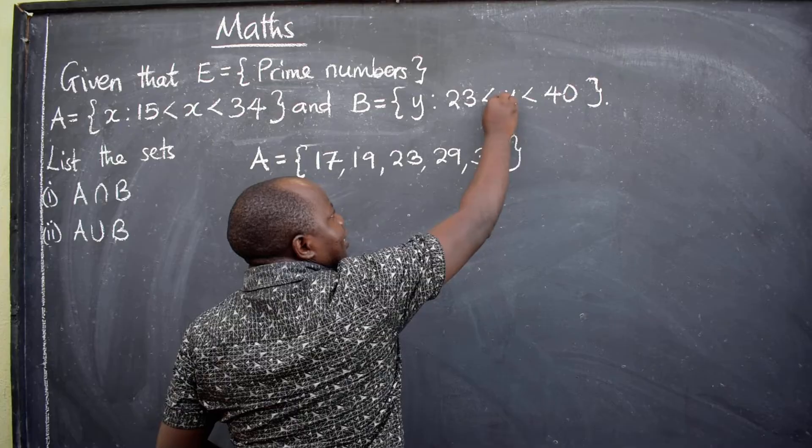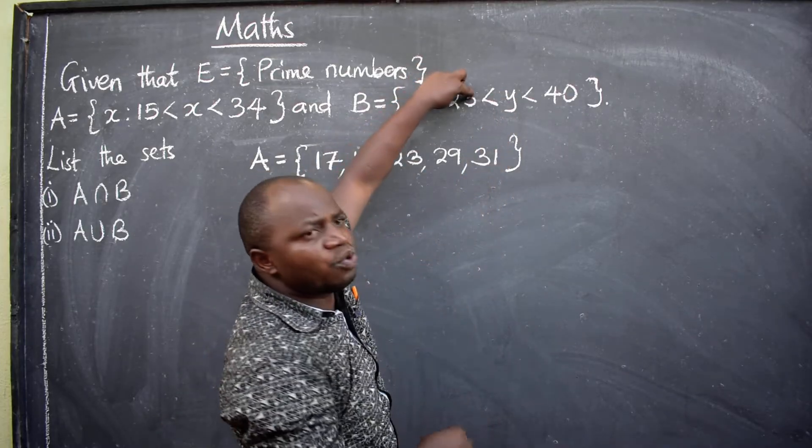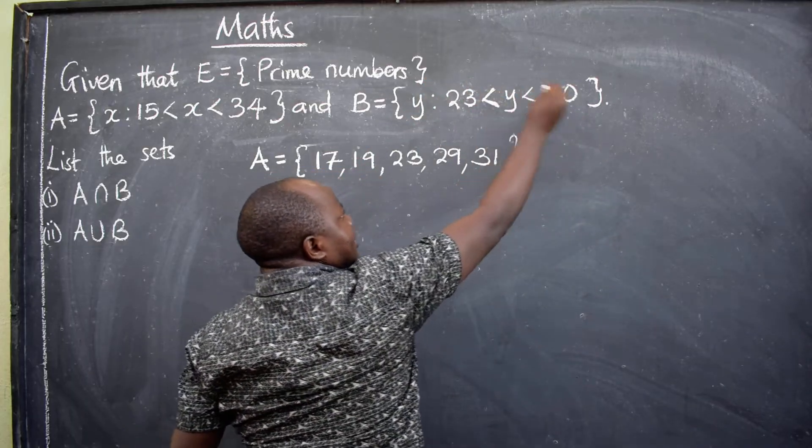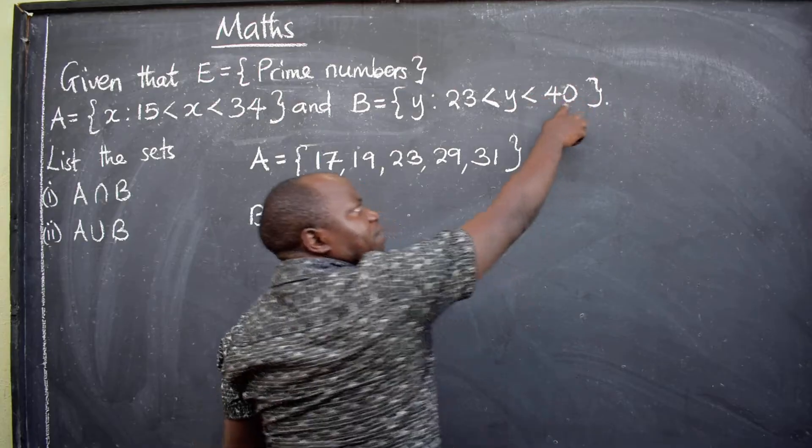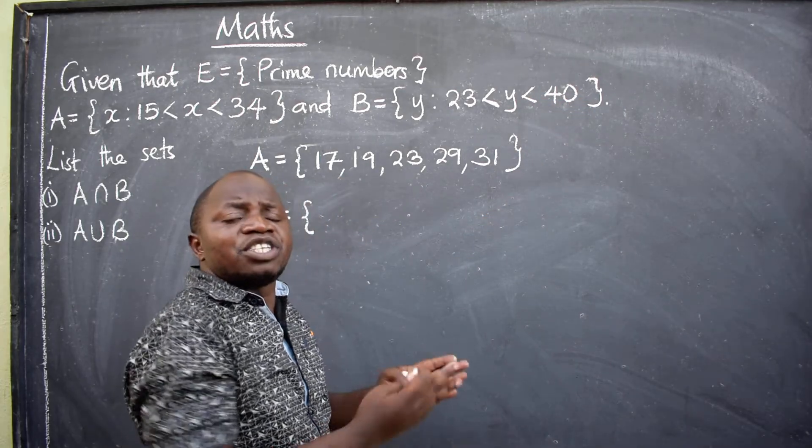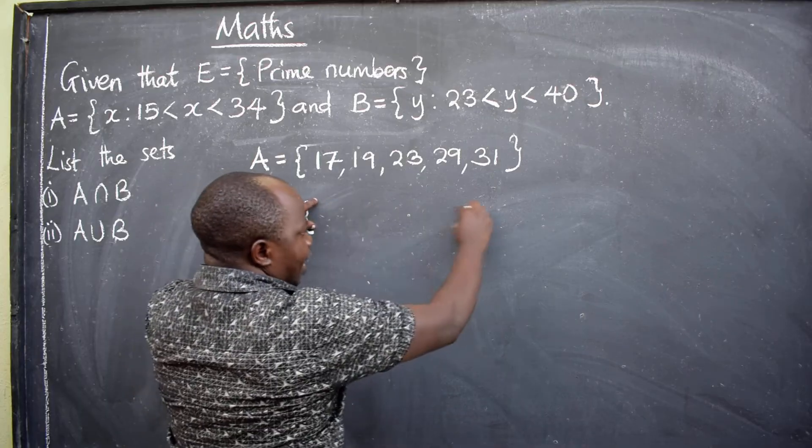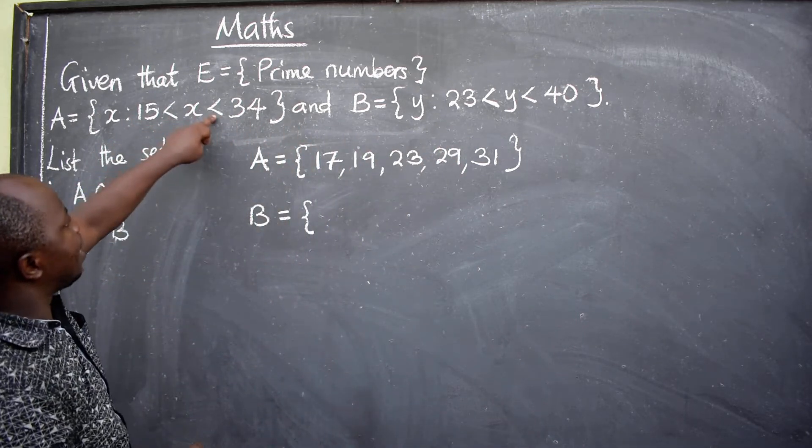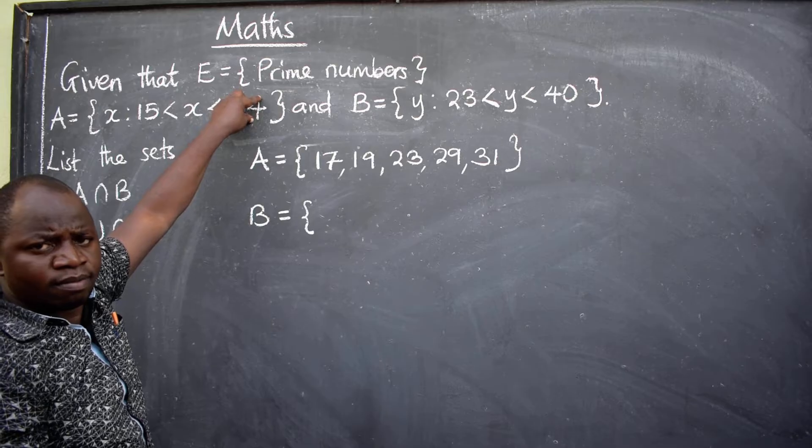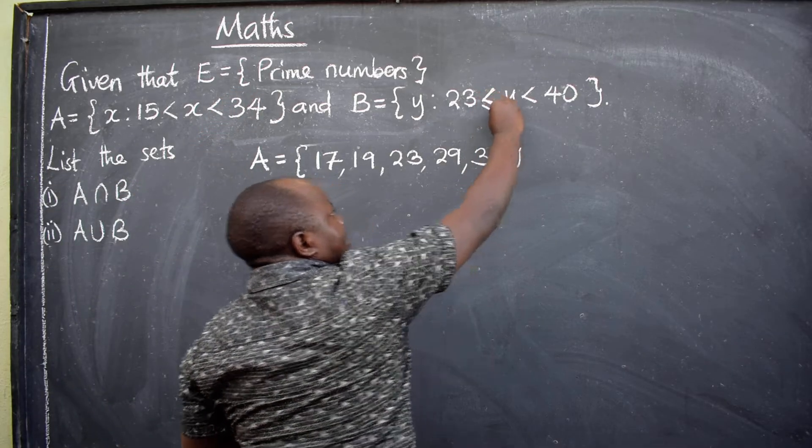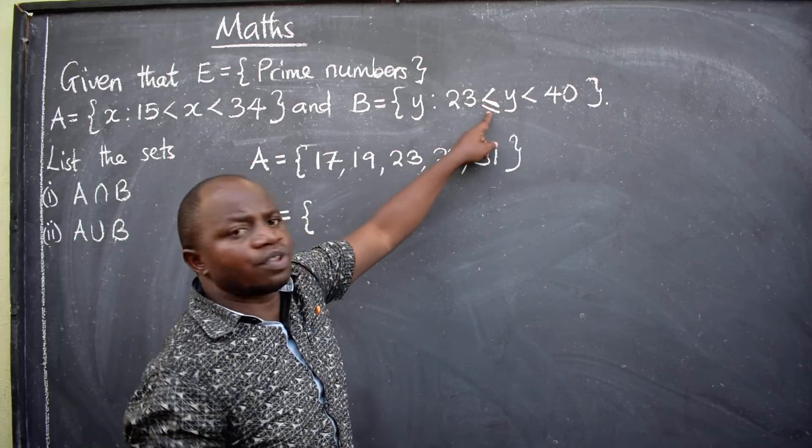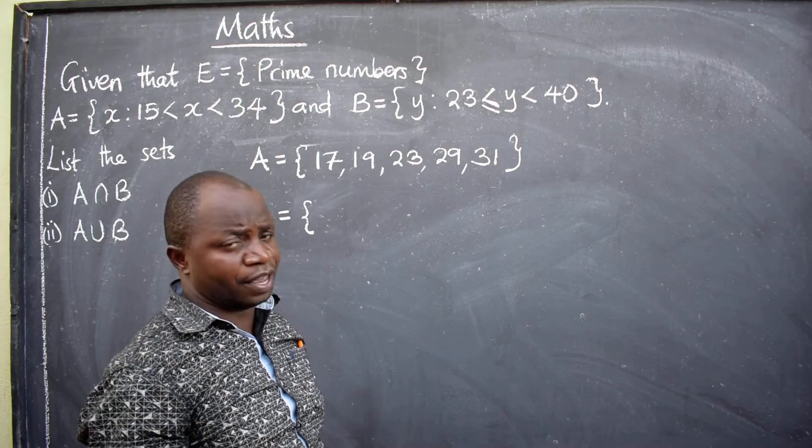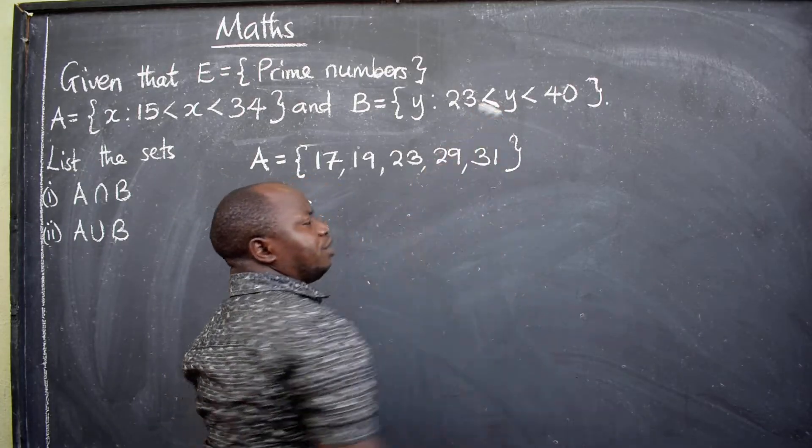This one here is less. It means 23 will not be part of the answer. Whenever you have got this less here, even here, if 40 is part of the solution, it means it will not be part of the answer. So, whenever you have these symbols here, they are saying don't include these numbers. If you had something like this, less or equal to, then they are saying you should include 23. I hope we are together. But since it was not there, we are not going to include.